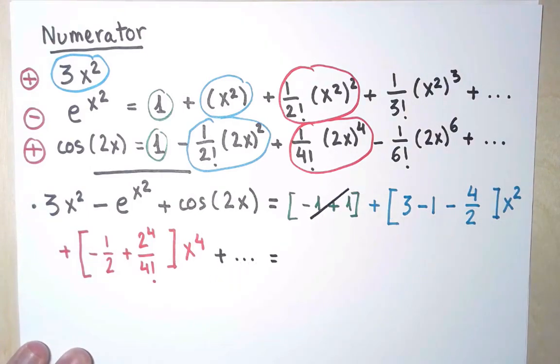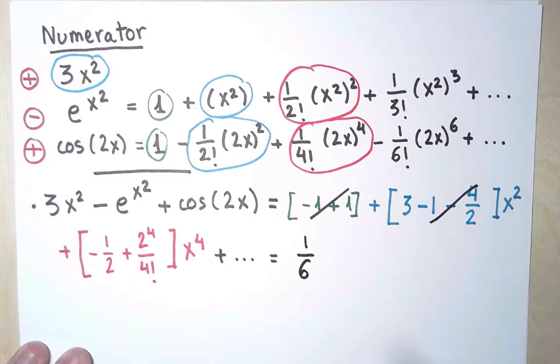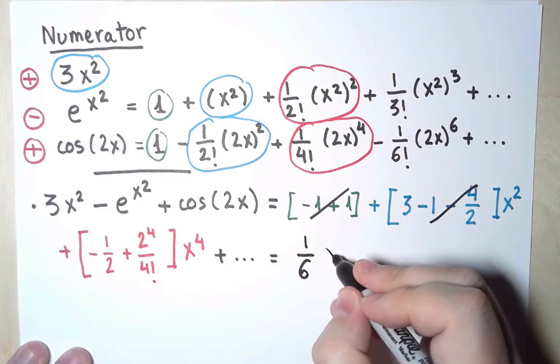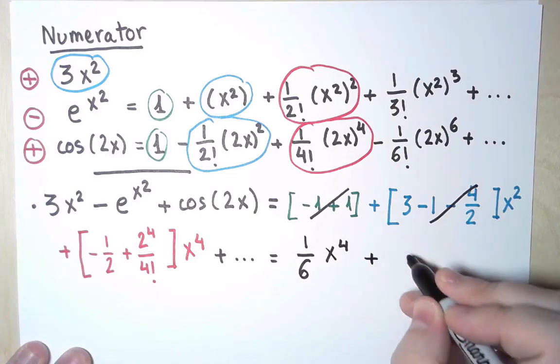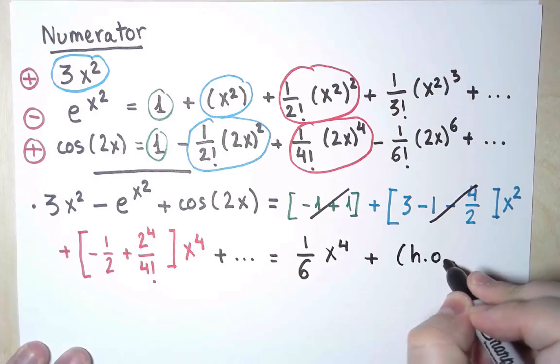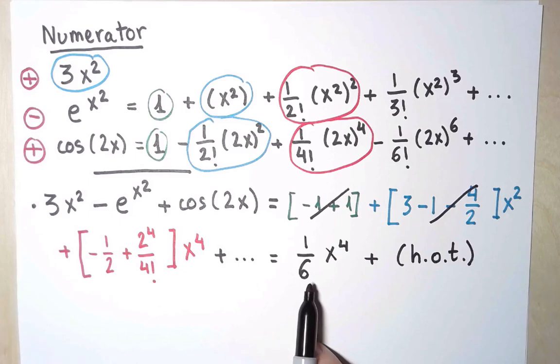I don't need to worry about what the rest is. So this cancels. This is 0. This cancels. This is 0. This is 1/6 x⁴. Which simplifies as 1/6 x⁴. Write the intermediate steps if necessary. So the first non-zero term is 1/6 x⁴. And then I have more terms. I'm going to abbreviate it as h.o.t., which means higher-order terms. And the point is, I don't care what they are. This is the only one that I'm going to need for the limit. That was the numerator.